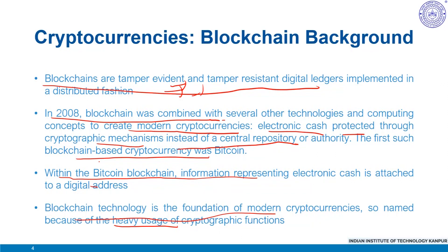Users utilize public and private keys to digitally sign and securely transact within that blockchain system. For cryptocurrency-based blockchain networks like Bitcoin which utilize mining, users may solve puzzles using cryptographic hash functions in the hope of being rewarded with a certain amount of native cryptocurrency. However, blockchain technology may be more broadly applicable than just simply cryptocurrencies, and this mining process we have already discussed in previous lessons.